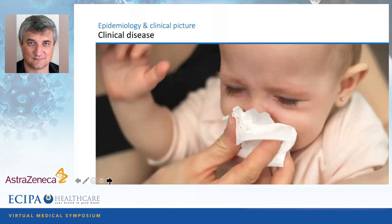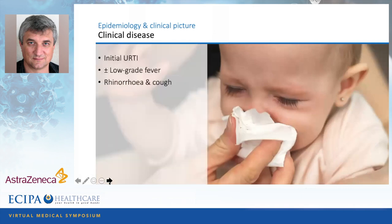Parents should know that the disease is self-limiting. The clinical disease usually starts with an upper airway infection, may go with low-grade fever — we often don't see fever but maybe low-grade fevers. They all present with a runny nose, blocked nose, and a cough. The cough is usually the reason for distress in the parents, who often believe that if a child coughs it means lung infection, but that's not really true — we can cough with just an upper airway infection.